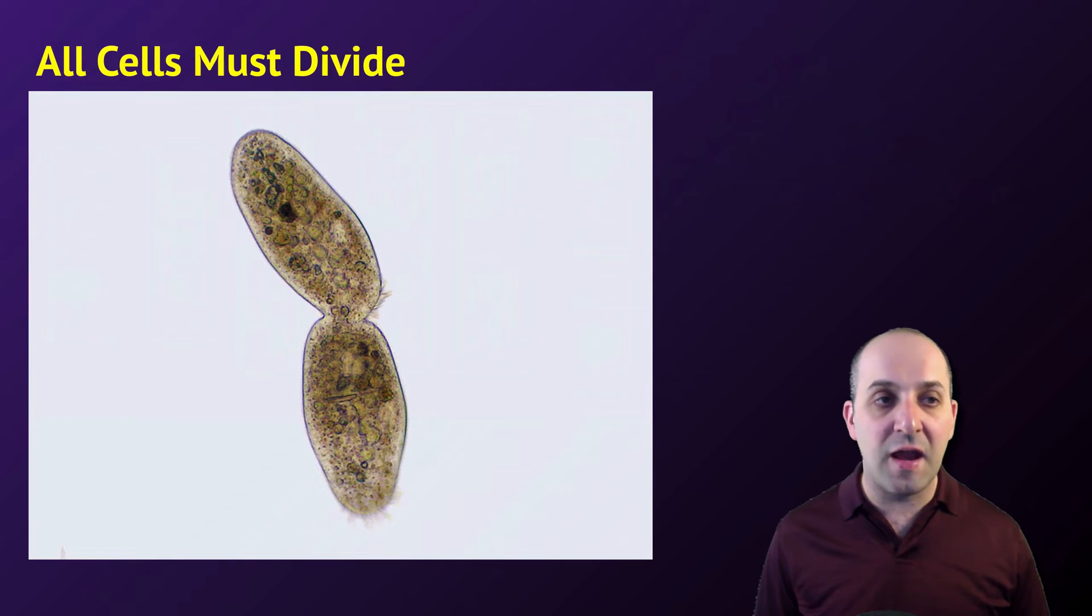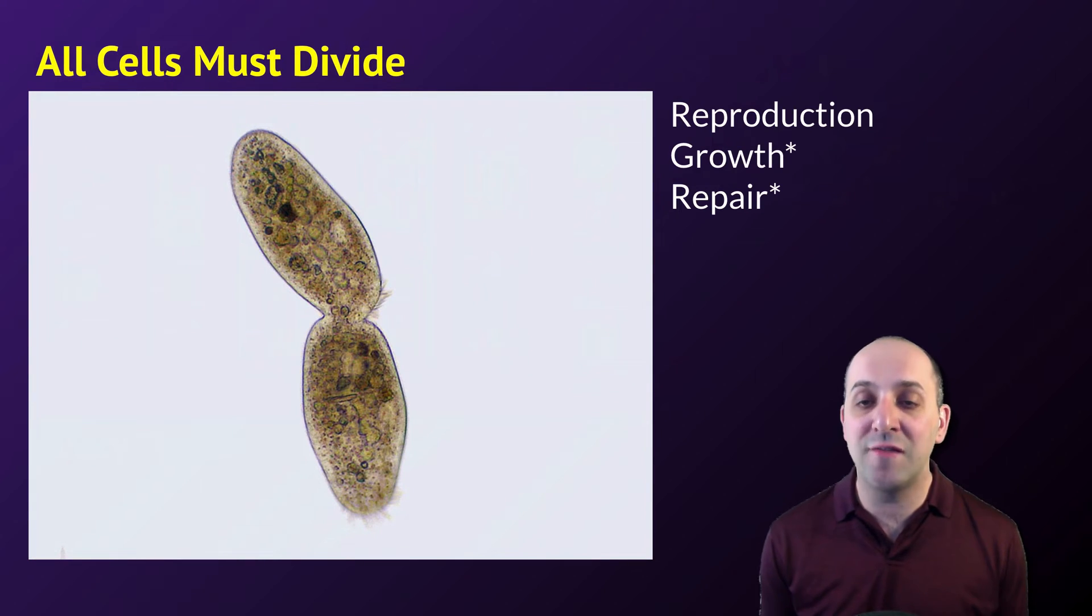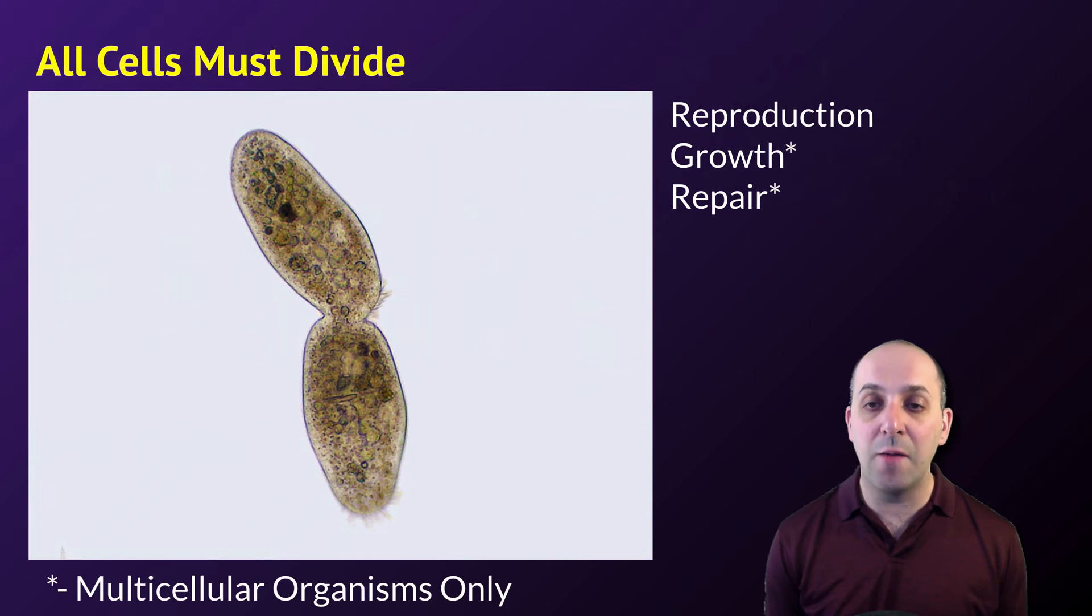It's important to understand that cells must divide. The main reasons why cells need to divide are for reproduction, or passing on information to the next generation, and in multicellular organisms for the purposes of growth and repair. You've been able to grow as a human being because you've made more cells than have been destroyed in your body. Similarly, any time you've damaged yourself, your body has made new cells to replace the ones that were killed.